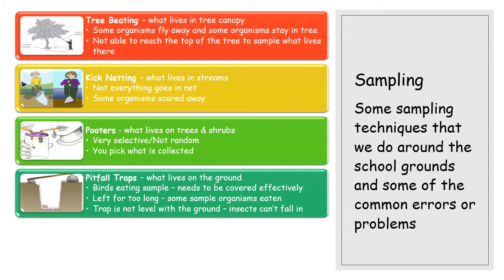Pitfall traps are for sampling what lives on the ground. You dig a hole, put a yogurt pot in, make sure it's level with the ground, then leave it for organisms to walk along and fall in. You come back and identify them. Problems include birds eating the trapped organisms — so they need to be covered — and leaving them too long means organisms eat each other. A spider getting into your pitfall trap will eat everything else in there: a free lunch buffet.